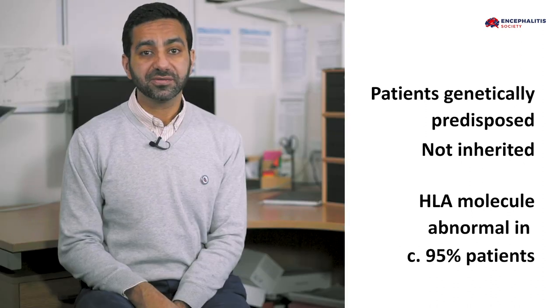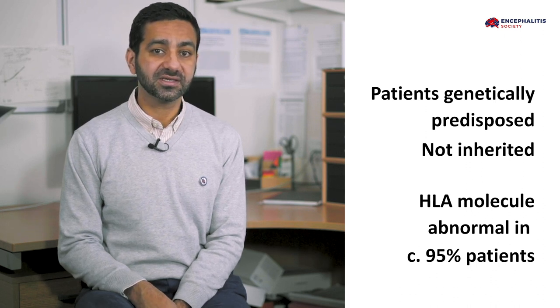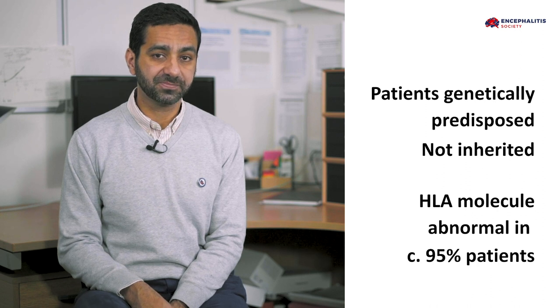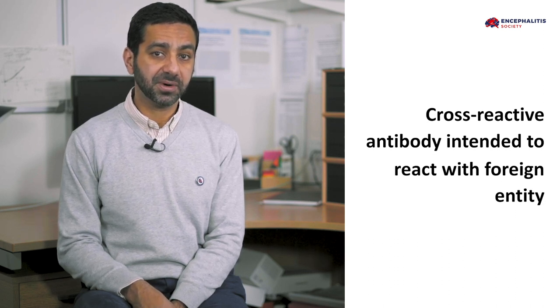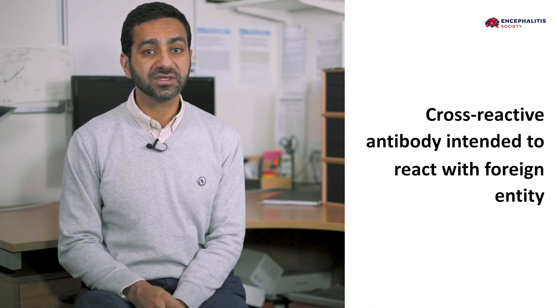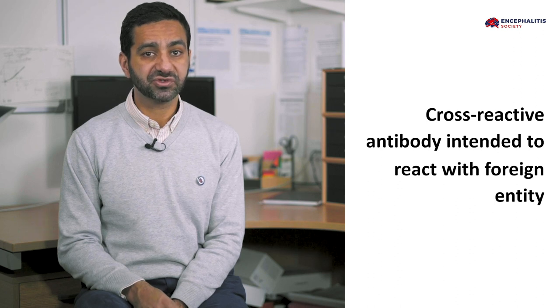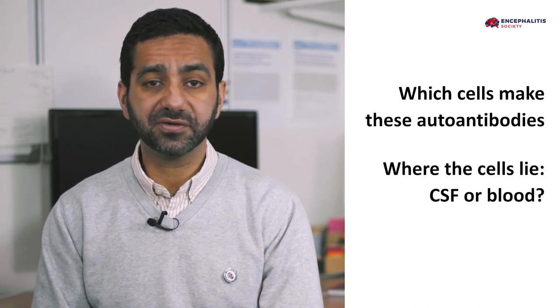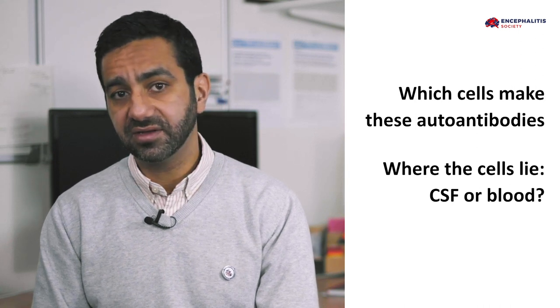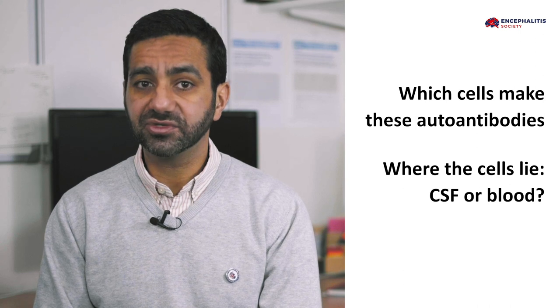This HLA finding is almost universal and we are working on it more intensively, as it's a really exciting clue. One possibility is that the cross-reactive antibody was originally intended to react with a foreign pathogen, and the HLA molecule may give us clues as to which pathogen triggered this illness. We also don't know which cells make these autoantibodies or where those cells lie — in the spinal fluid, or in the blood. We're spending a lot of time working out which cells in which compartments produce the antibodies, to identify which cells might be best targeted with future treatments.